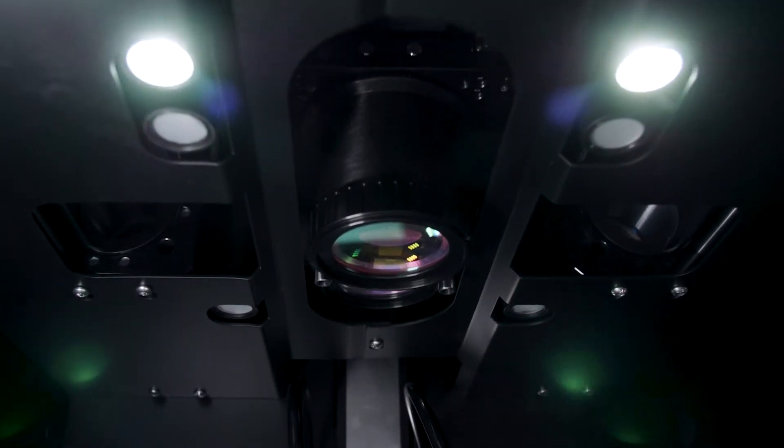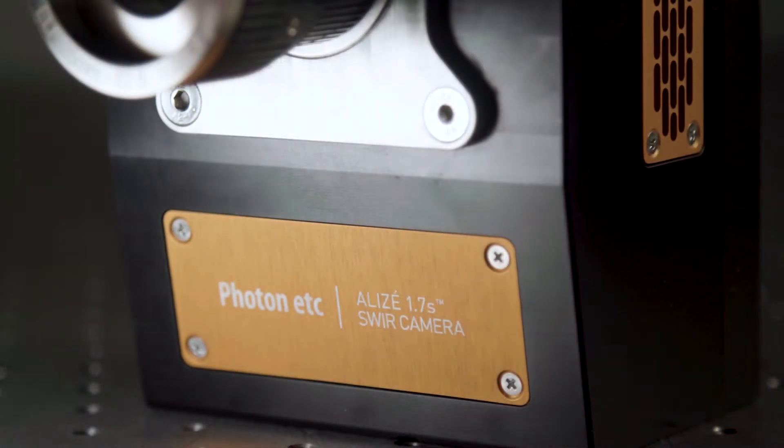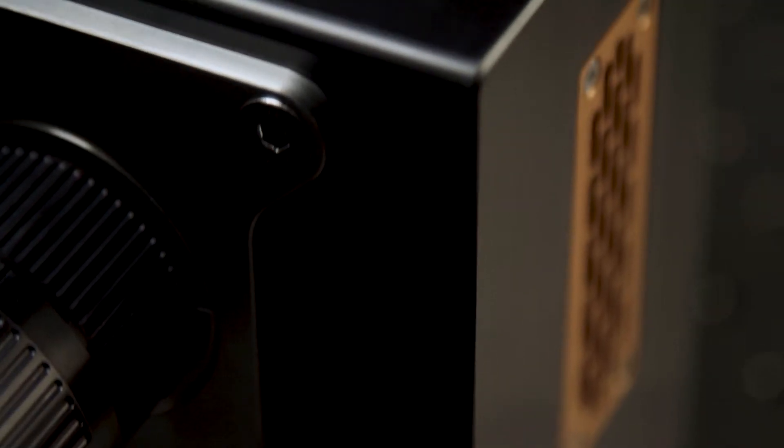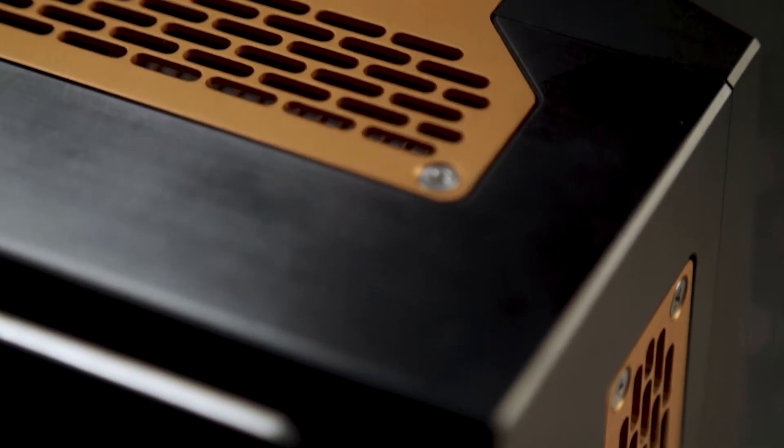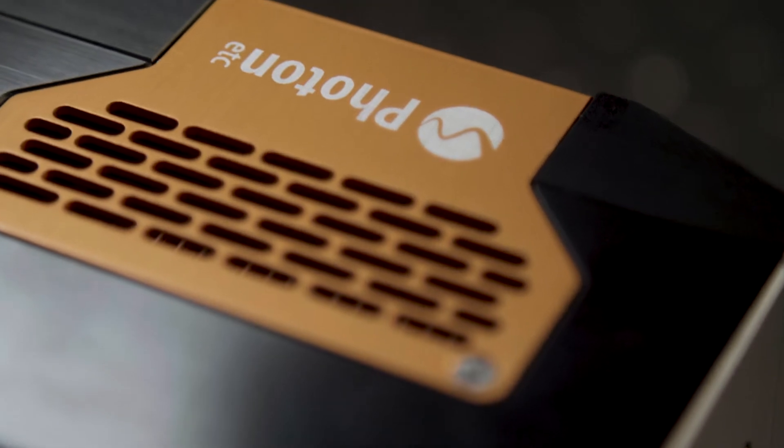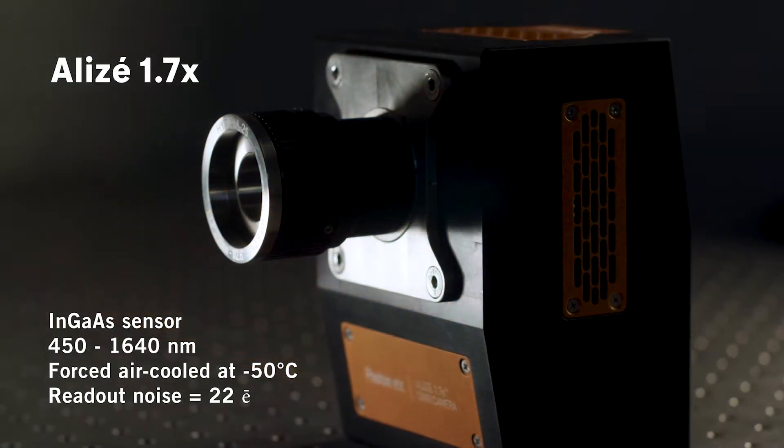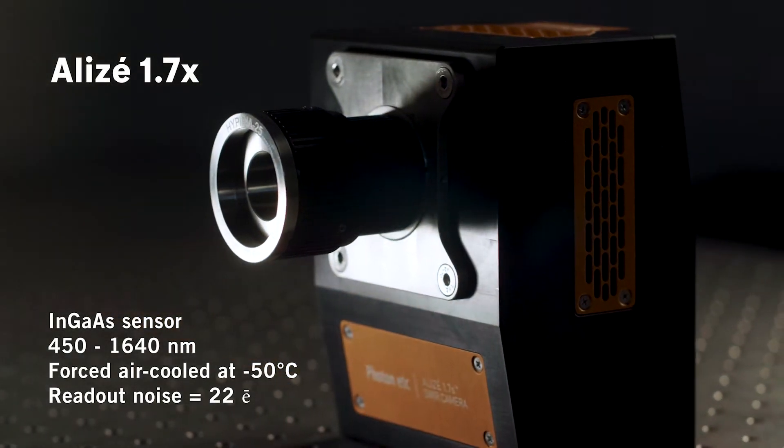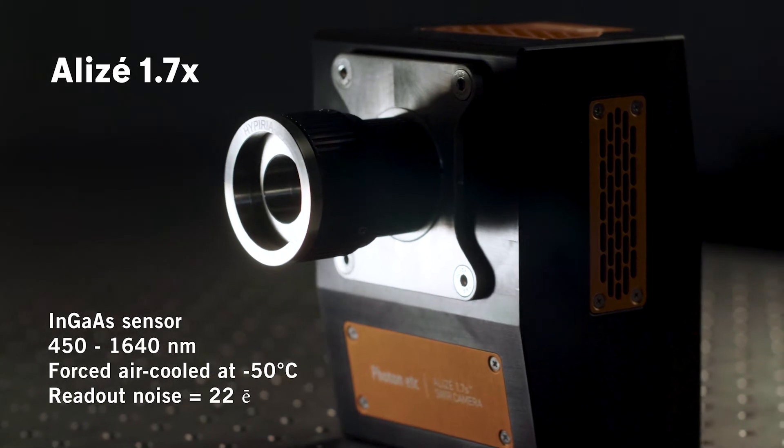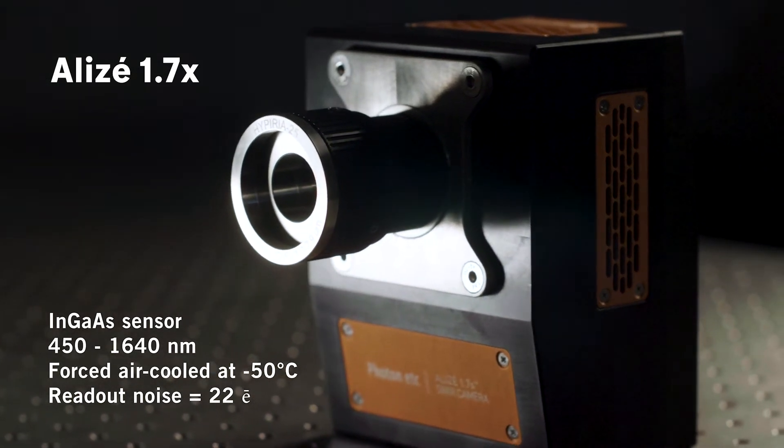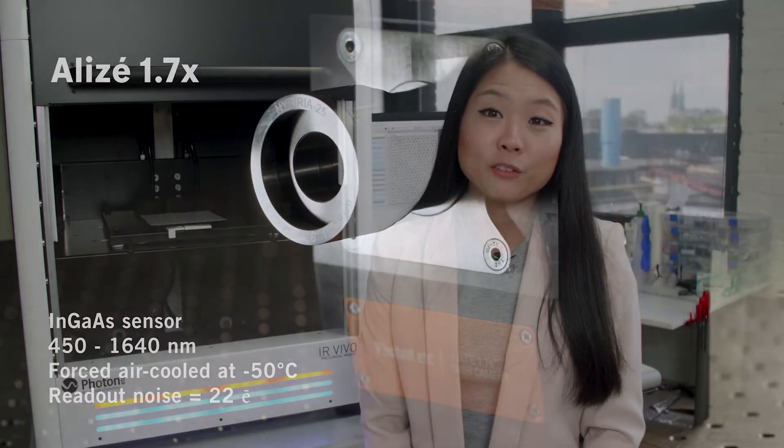The light is directed to our high-speed camera, the Alize 1.7 X, which is also a product from Photon etc. It is cooled down to minus 50 degrees and it has a spectral range of 500 to 1600 nanometers. What's cool is that we can have a live view, even though we are not recording a video now. Have a look!